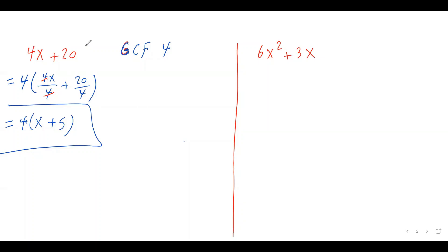We are rewriting this expression as a product of two terms: 4 and (x + 5). If you distribute the 4 into the bracket, you get back 4x + 20. That's our first example. Let's do another one.